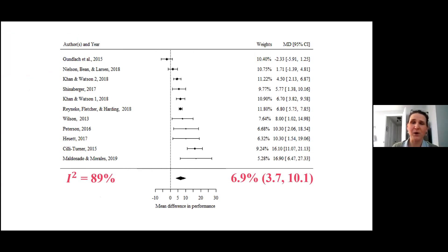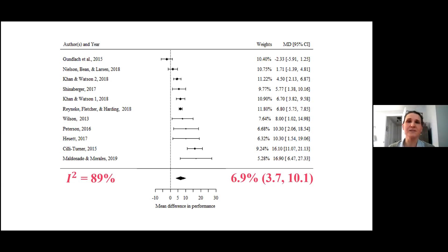Here's a forest plot showing our study effects. The vertical dashed line demarcates no difference between the flipped and lecture classes on the final outcome. Effects to the right of the vertical line show that for nine of the eleven studies, the flipped class had significantly higher outcomes than the lecture class.